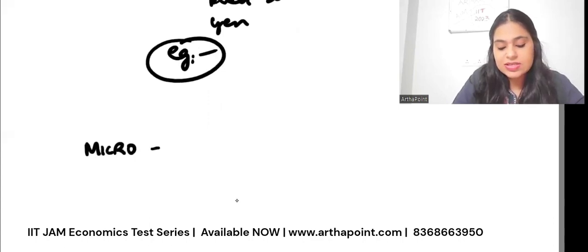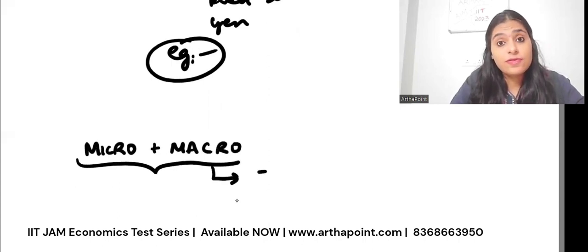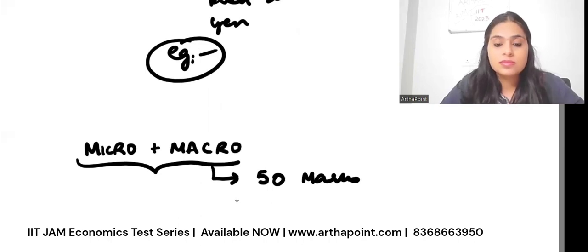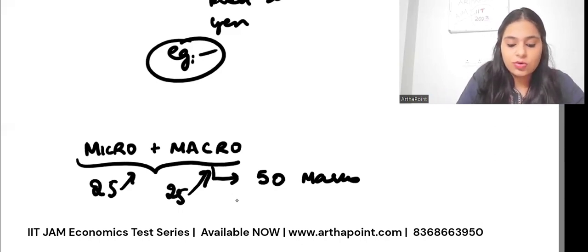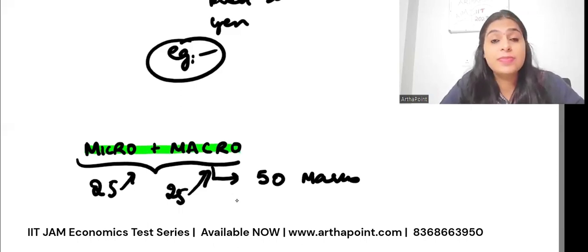micro plus macro, dhyan se suna hai, this comes for 50 marks out of 100. 25 micro and 25 macro. Why not just put these in your hand? Many students are there. Ma'am maths weak hai, abhi maths nahi samajh me aa raha, maths nahi ho paara. Ma'am integration nahi aati, ma'am continuity mein dikkat hai. No problem. Let's start with micro plus macro. Let us give our 100% to that.